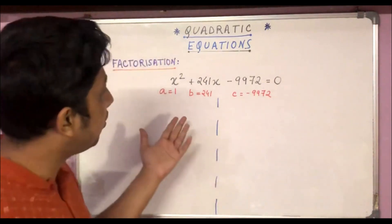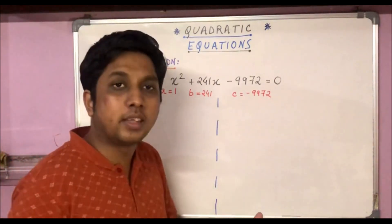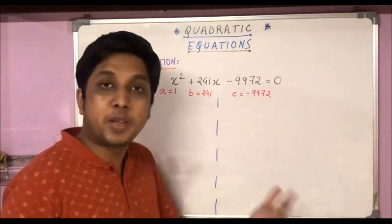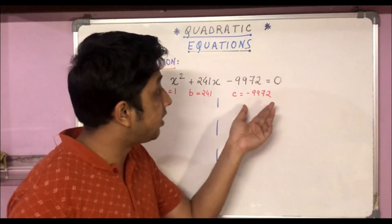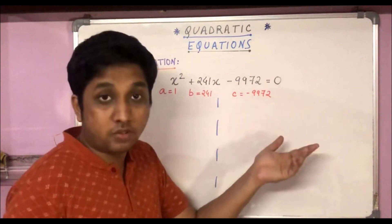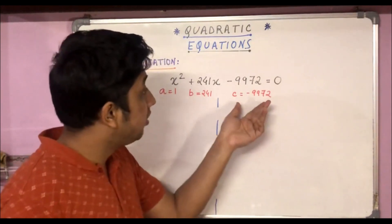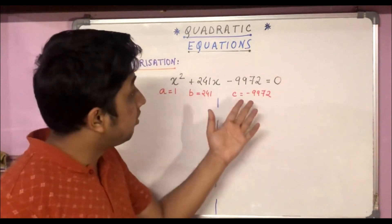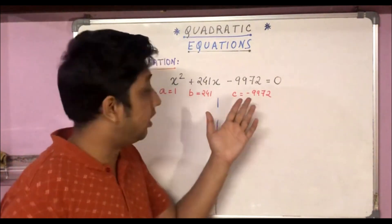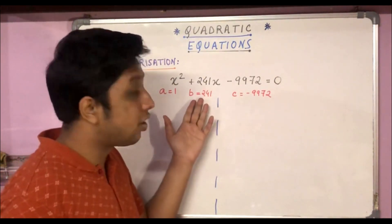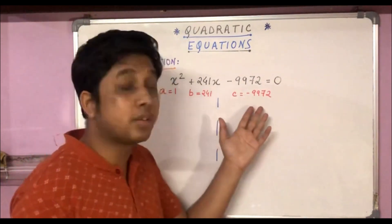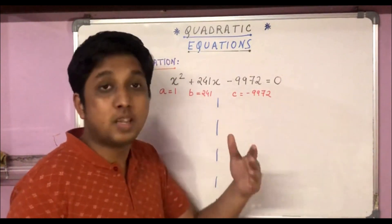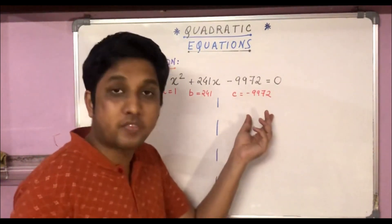So let's use the same trick and see if we can find the middle-term break values. Because if we typically use the conventional method of finding middle-term break by finding out the factors of 9972 and then trying to find a combination where the product is 9972 and the addition or subtraction condition is 241, then that's a very cumbersome way of doing it. It will take a lot of time and it's practically impossible to do it within a very short period of time.